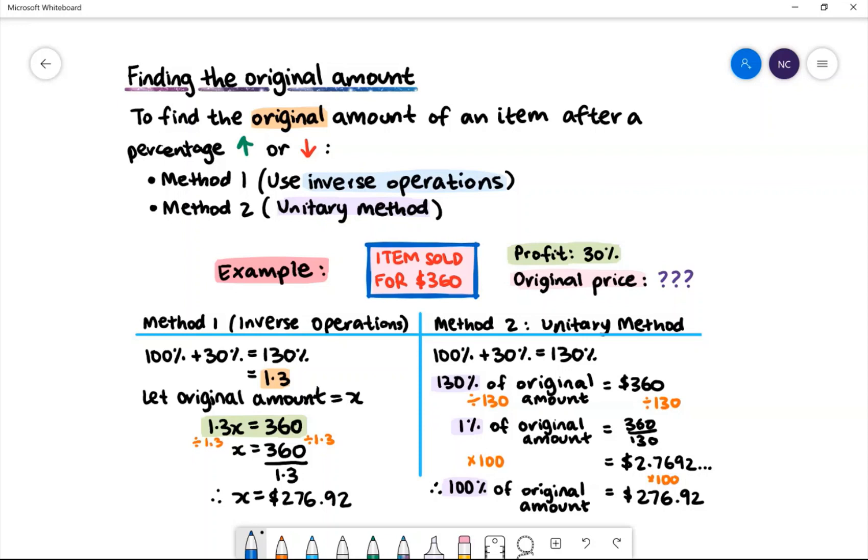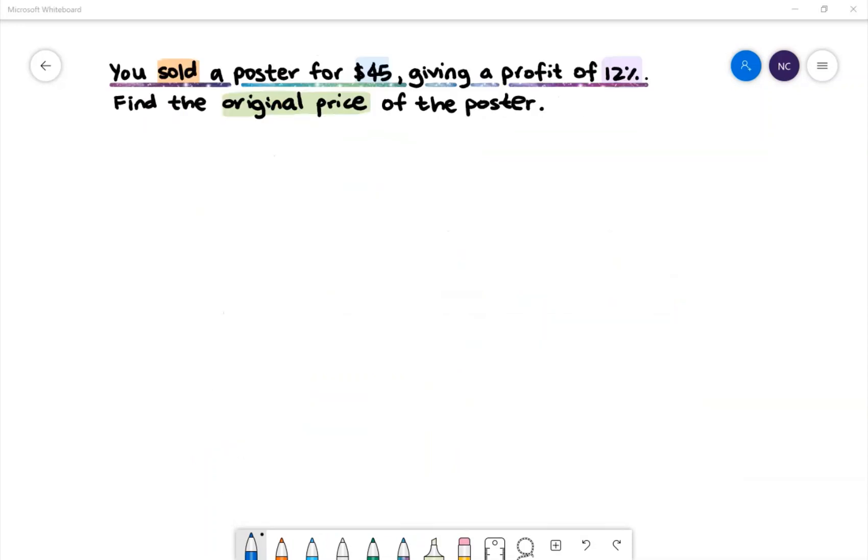In our next examples, we'll be using method one. Let's take a look at this example. You sold a poster for $45, giving a profit of 12%. Find the original price of the poster.